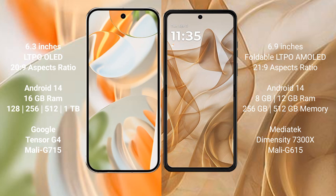The Google Pixel 9 Pro comes with 16GB RAM and internal storage options of 128GB, 256GB, 512GB, and 1TB. It is powered by the Google Tensor G4 processor with a Mali G715 GPU.